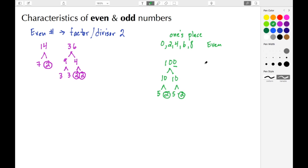Another example would be the number 18. We have 9 times 2. Again, we have a factor here or divisor here of 2. So these are the two things to remember about even numbers.